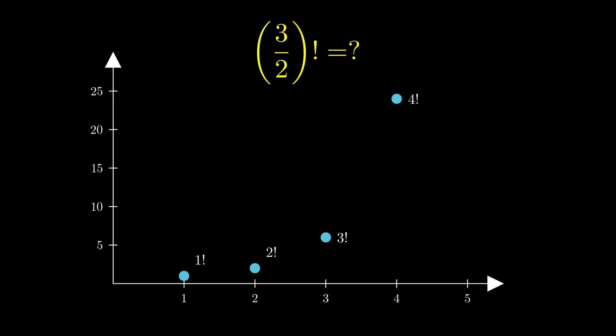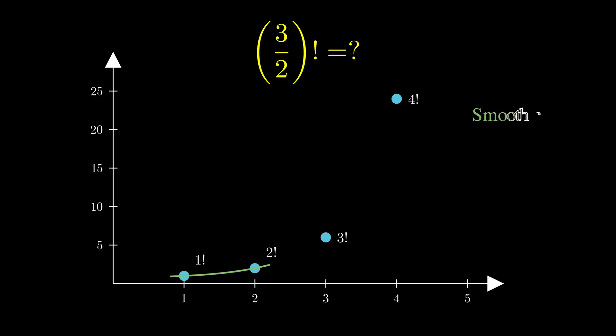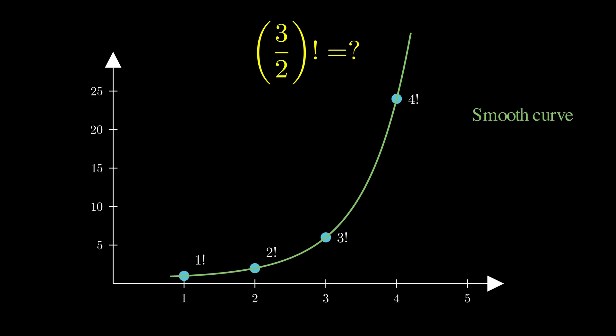If we plot these on a graph, we get these isolated dots and the natural question becomes, can we draw a smooth curve through these dots that would tell us what happens between the integers?